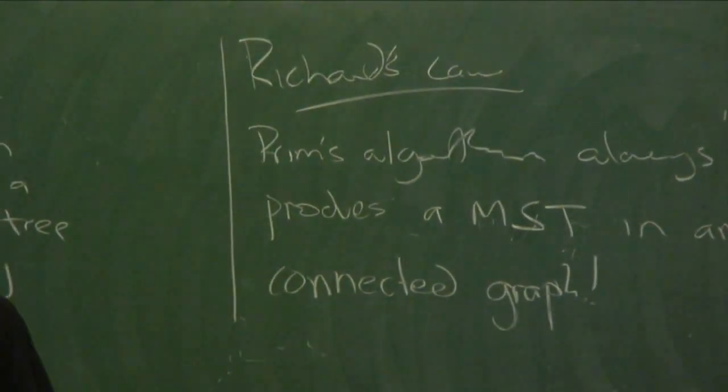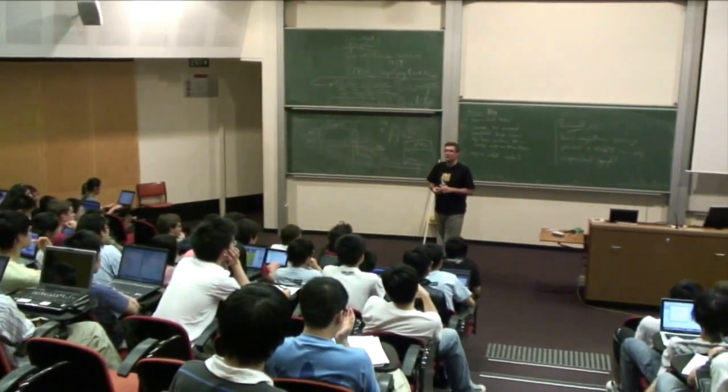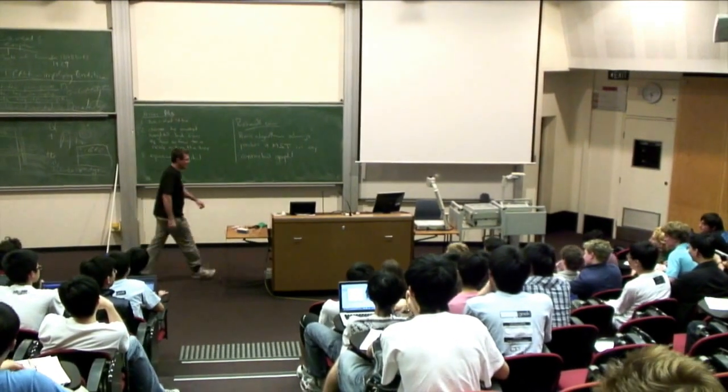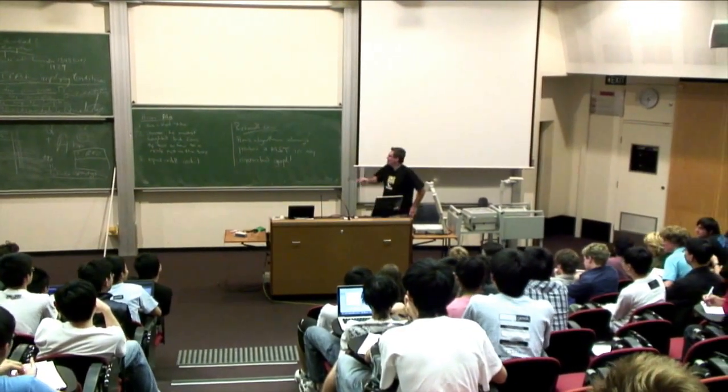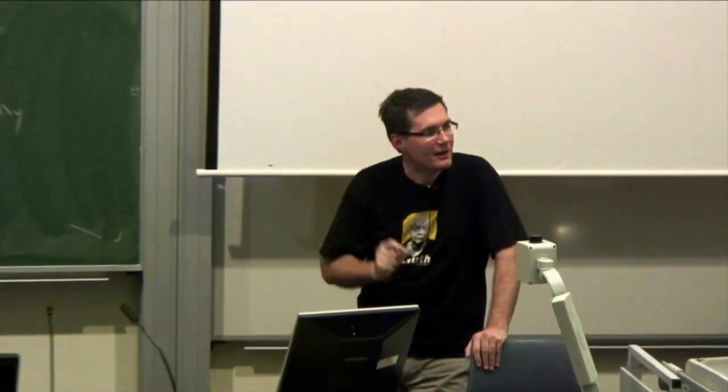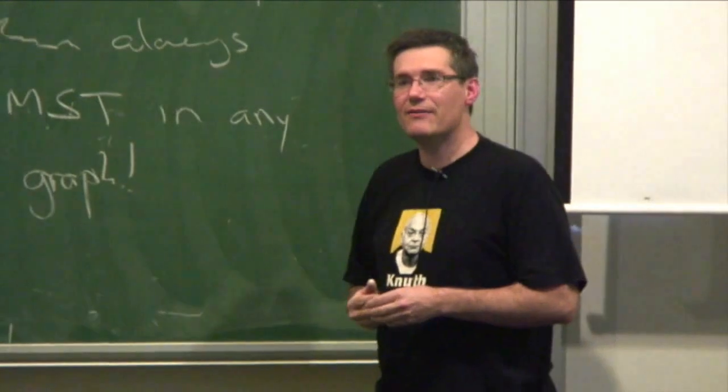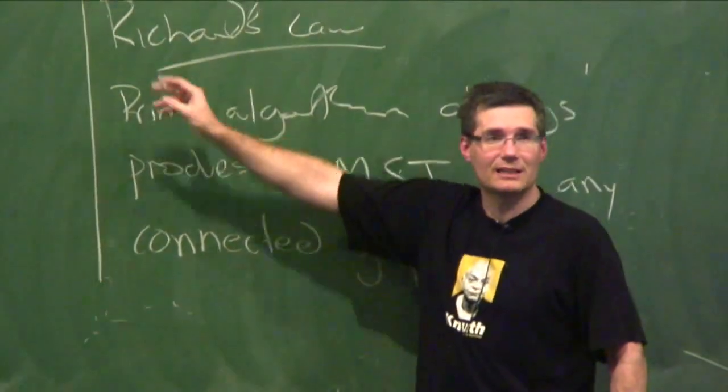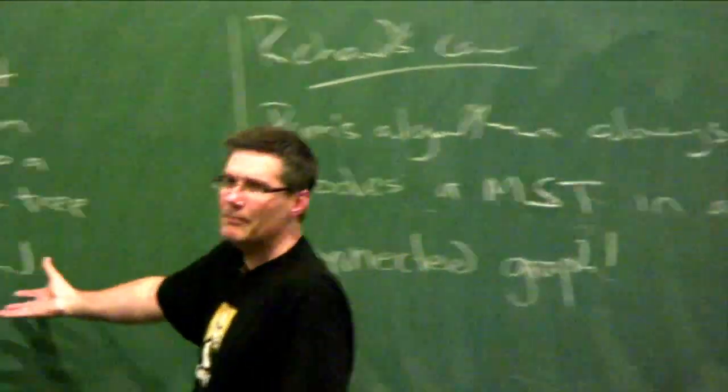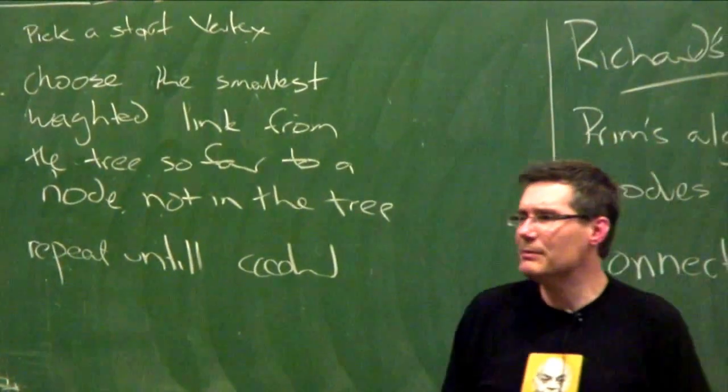When does it become a minimum spanning tree algorithm? When we prove that it's a minimum spanning tree algorithm. Who thinks Richard's law is right? Who thinks we need to see a proof of Richard's law? That would be just a course in which people told you stuff and you believed it.